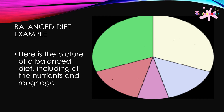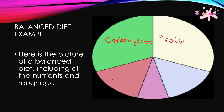Here is a picture of a balanced diet including all the nutrients and roughage. We can see carbohydrates, proteins, dairy, fats, vitamins and minerals, and a glass of water on the side.